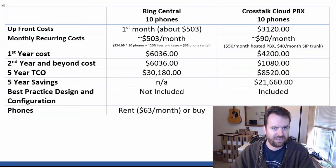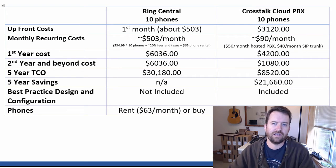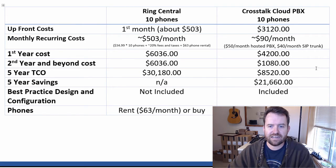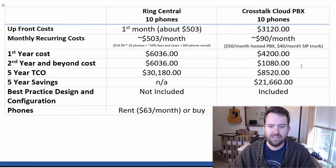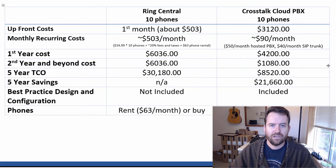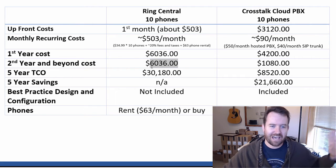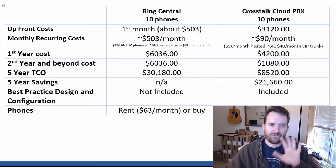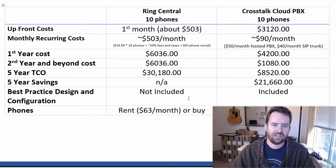Now where it gets really interesting is the second year and beyond. The first year included the purchase of the phones. The second year, all we're paying for on the Crosstalk Cloud PBX is the $90 a month — the hosted PBX and the SIP service — so that comes out to just over $1,000. On RingCentral, you're still paying $6,000 a year for that service.